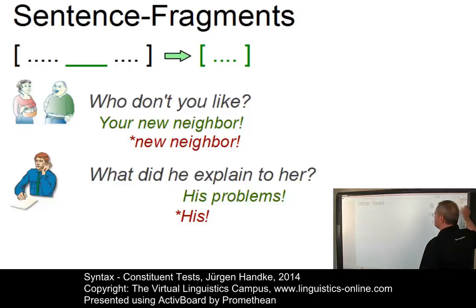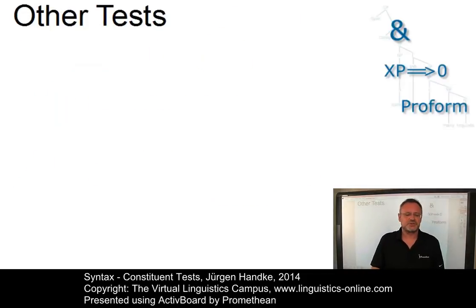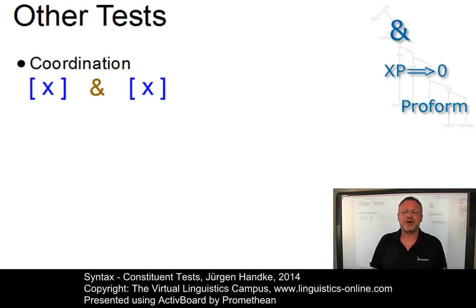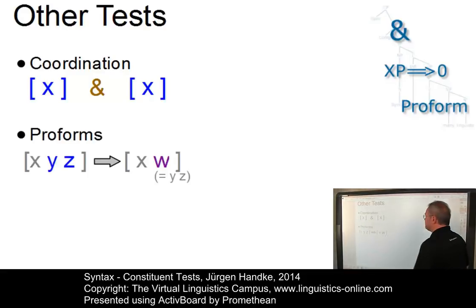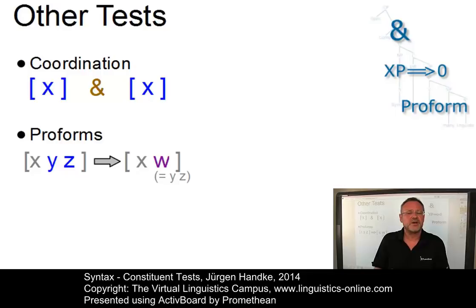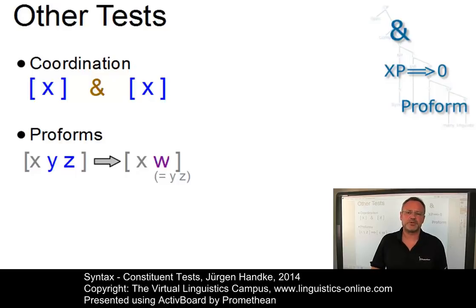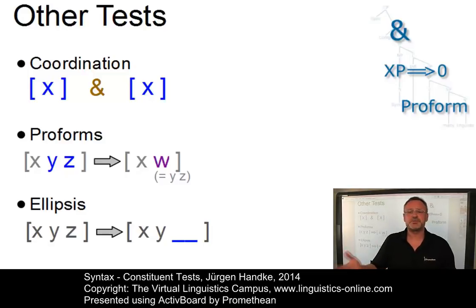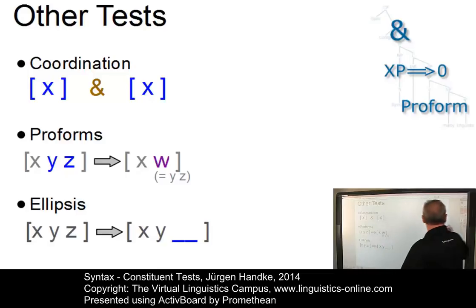Still, there are other types of syntactic evidence that support the claim that sentences are structured out of constituents. For example, the coordination test, which tests constituent identity; the proform test, which tests on the basis of a replacement test that replaces constituents by appropriate proforms; or the ellipsis test, which tests the possibility of dropping or omitting constituents. Let us look at coordination first.